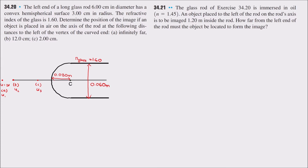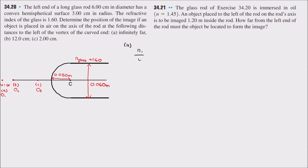We need to find image positions I1, I2, and I3 corresponding to the three object positions. We apply the formula for refraction at a spherical surface: n1/u + n2/v = (n2 - n1)/r. For all cases, light travels from air into glass.